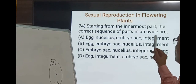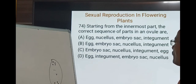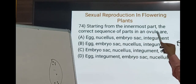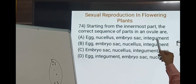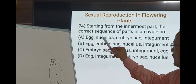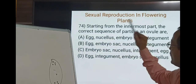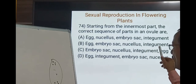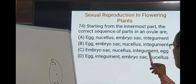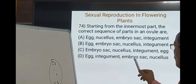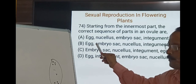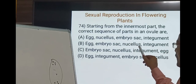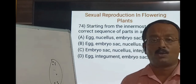Starting from the innermost part, the correct sequence in an ovule is: egg, embryo sac, nucellus, and integument. The egg is present inside the embryo sac, the embryo sac is embedded inside the nucellus towards the micropylar end, and the nucellus is covered by one or two layers of integument. So the second option — egg, embryo sac, nucellus, integument — is correct.